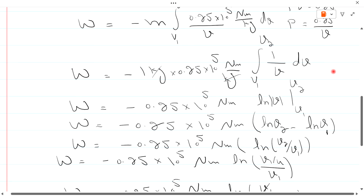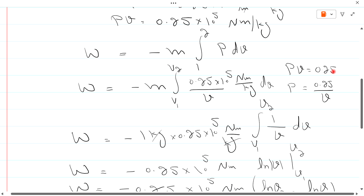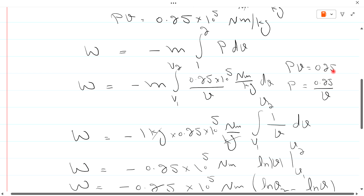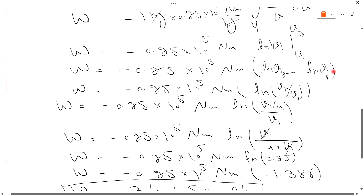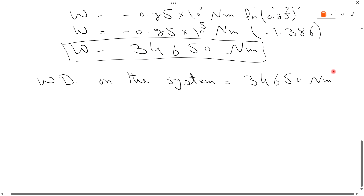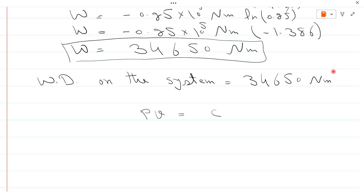Now we draw the PV diagram for this process. Since PV = 0.25 = constant, we have p1·v1 = p2·v2 = constant. This is an isothermal compression curve on the PV diagram.